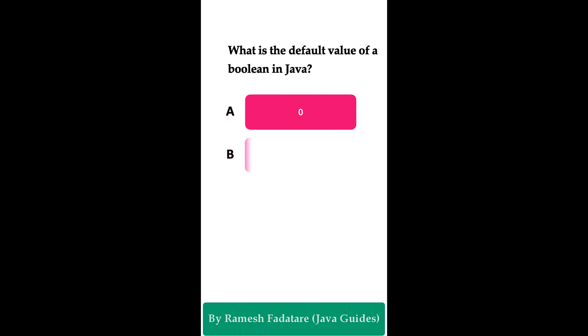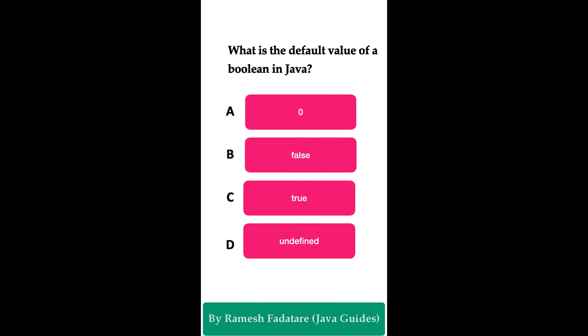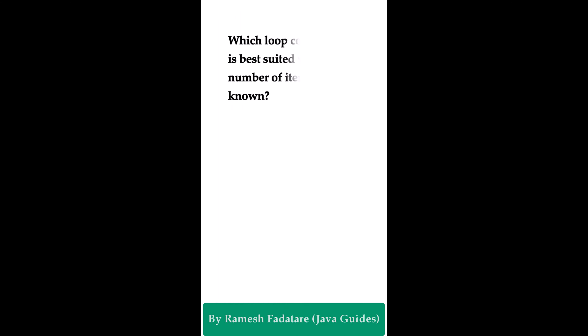What is the default value of boolean in Java? Option A: zero. Option B: false. Option C: true. Option D: undefined. The correct answer is false. In Java, boolean is a primitive data type with two values: false and true. The default value for a boolean data type is false.